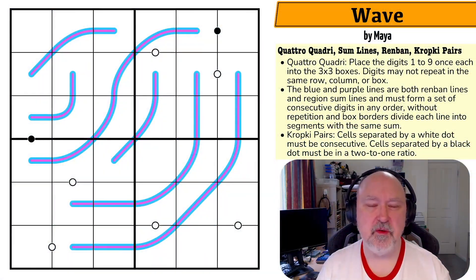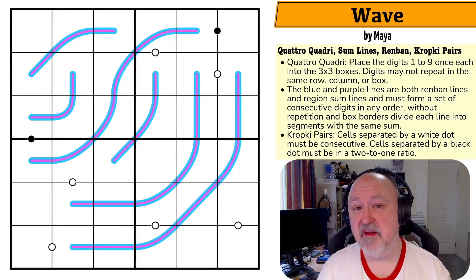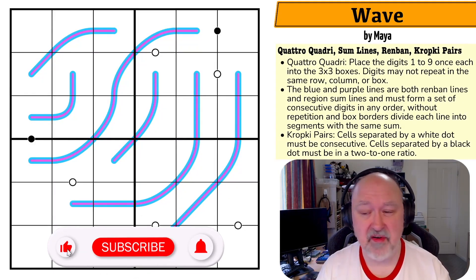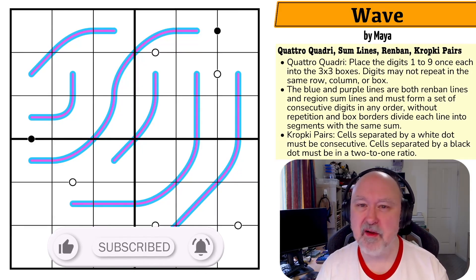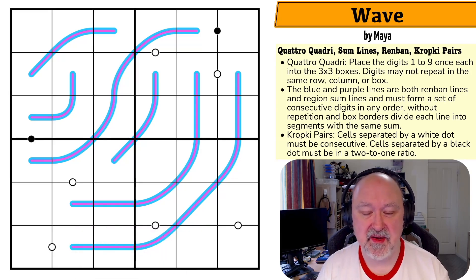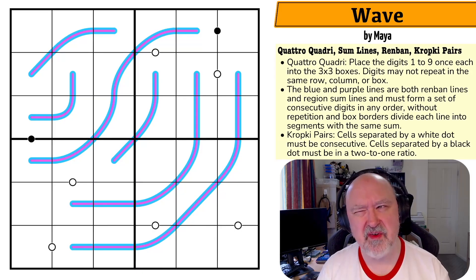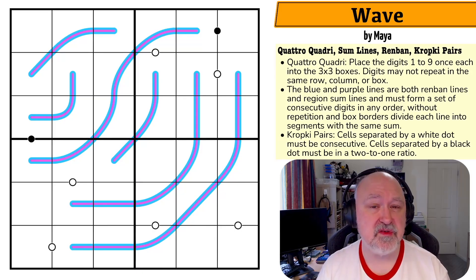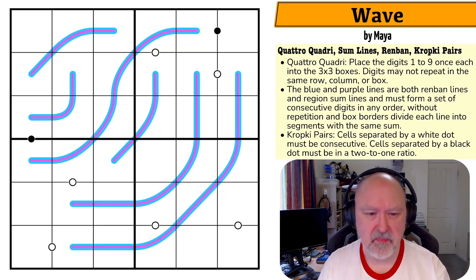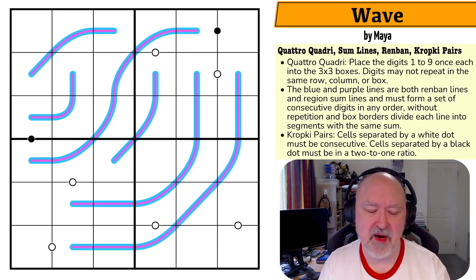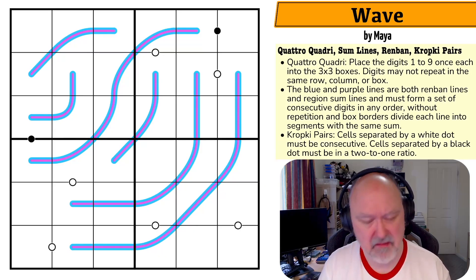Hi, and welcome to Bremster Puzzles, a channel where I try and showcase the fun that can be had in the world of variant Sudoku. And this is a very variant Sudoku, because some people say this isn't really a Sudoku. This is a Quattro Quadri by Maya called Wave. This puzzle has been posted to both Logic Masters Germany and was also part of a puzzle pack which Maya put out of Quattro Quadri puzzles. I'll link to both below. Let's just get straight into it.